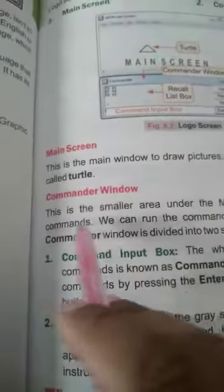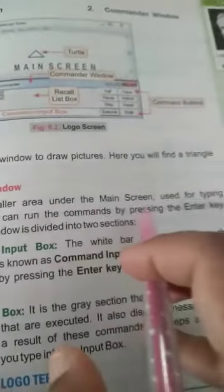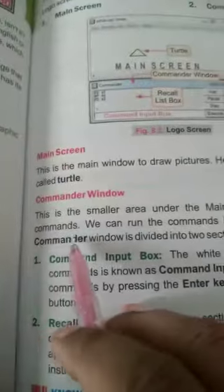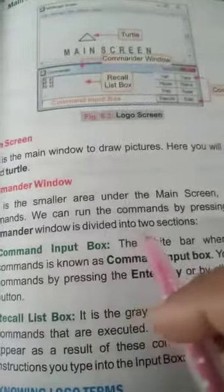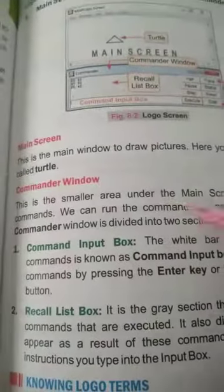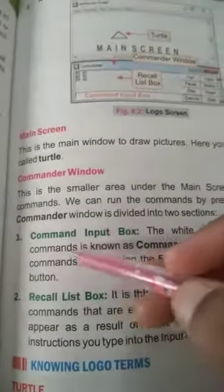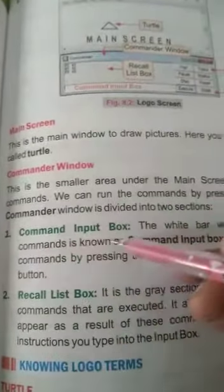Commander window. This is the smaller area under the main screen used for typing commands. We can run the commands by pressing the enter key. Commander window is divided into two sections: first is command input box, second is recall list box.